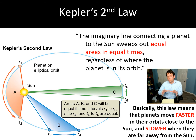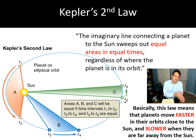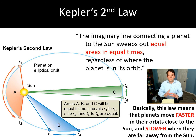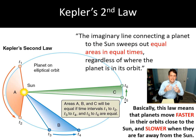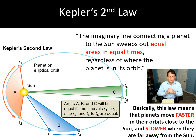One important corollary: planets travel faster when they're closer to the sun and more slowly when they're farther away. But to be precise, that is a consequence of Kepler's second law, not the statement of it. Kepler's second law is that a planet sweeps out equal areas in equal times. From that, you can prove the planet must travel faster near the sun. Both facts are worth remembering.